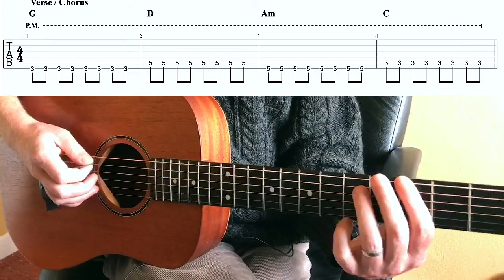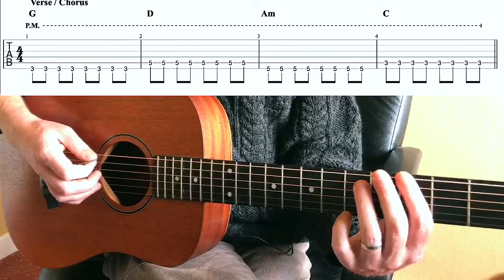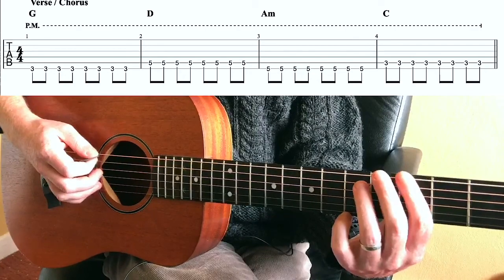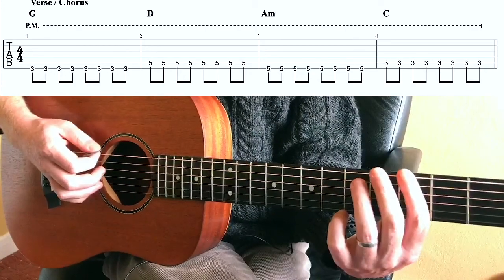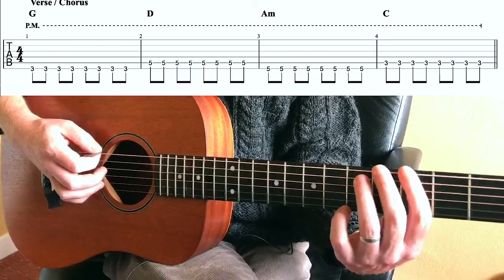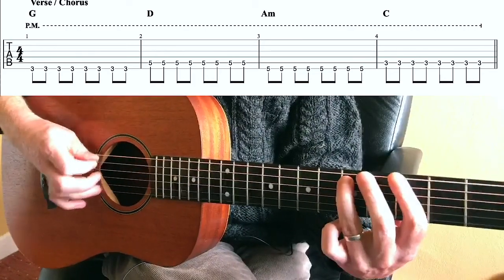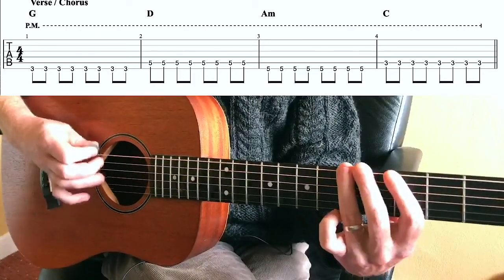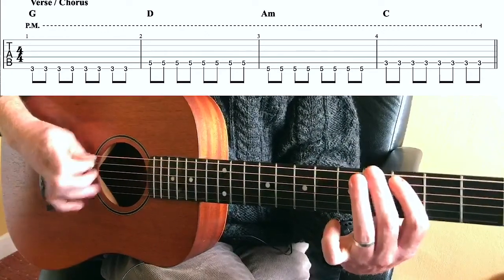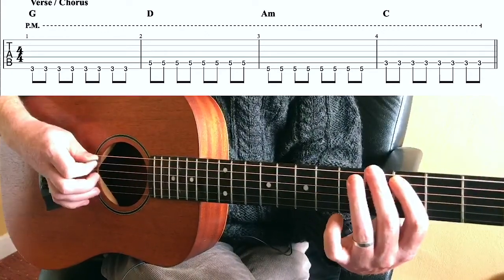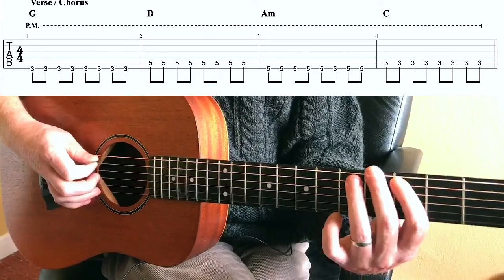All right. Now, that is 16 notes per bar. I would not recommend you count 16. You will wear yourself out, my friends. But count it like one E and a, two E and a, three E and a, four E and a. One E and a, two E and a, three E and a, four E and a, like that. All right. So that'll be the fourth level.